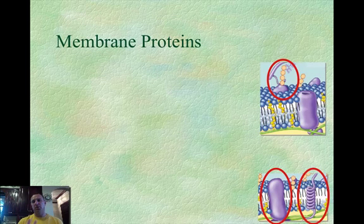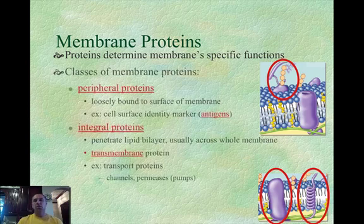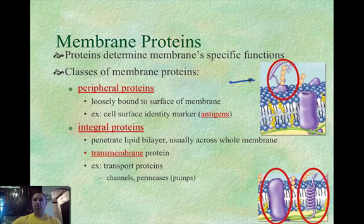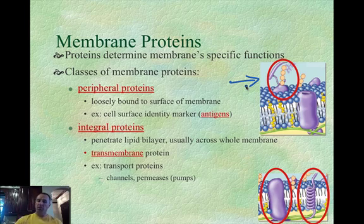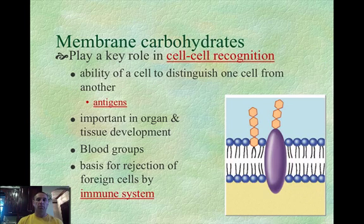When we talk about membrane proteins, there are two types, depending on their location. The first is a peripheral protein — these are found on the outside of the membrane, extended from it and loosely attached, like the antigen. The other type is integral proteins, which are the transmembrane proteins that go completely through the membrane, like your channels which allow things to move back and forth.